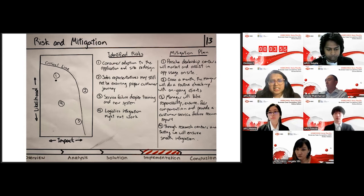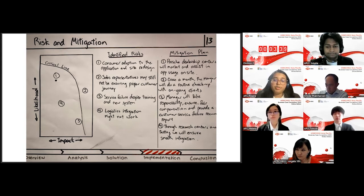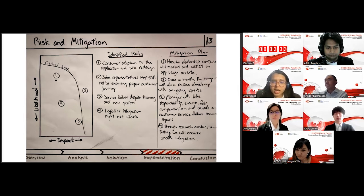Thirdly, we can see that there might be a possibility of service failure, despite all the new policies and training. Now, in order to mitigate that, we will be ensuring that the managers take full responsibility and accountability to guarantee fair compensation and to provide a customer service failure recovery report so that future problems don't occur. Last but not least, for the logistic integration, it might not work because there's communication with another facility abroad. In order to counter that, we would like to empower our research centers in China to test the prototypes and to ensure that there is a smooth integration throughout the whole process.